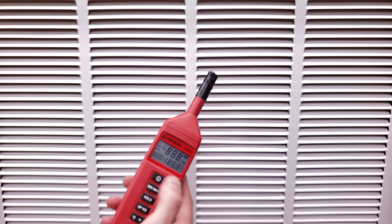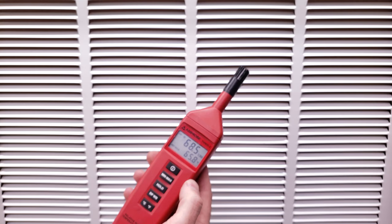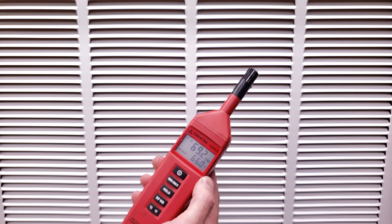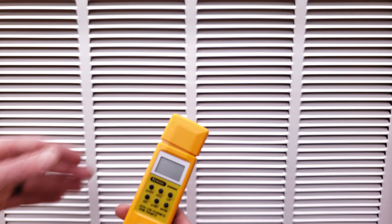Here's our wet bulb psychrometer, so we're just going to turn it on and then press wet bulb and get our reading. It looks like we're reading right about 65.8 for our wet bulb, right about 66 right now. So that's our wet bulb temperature.